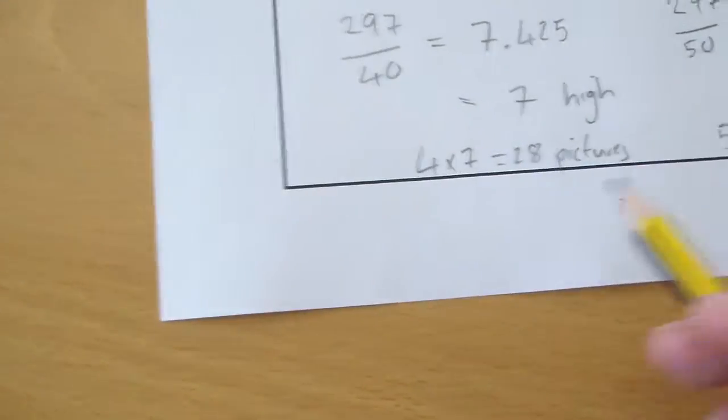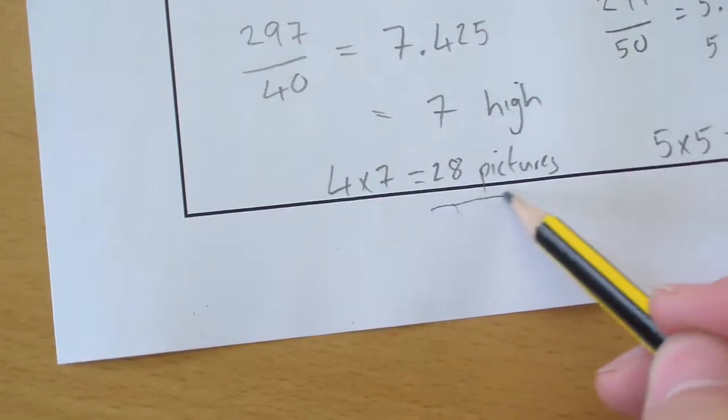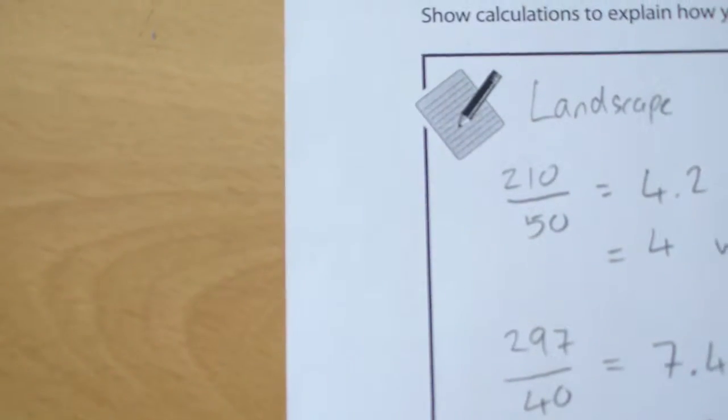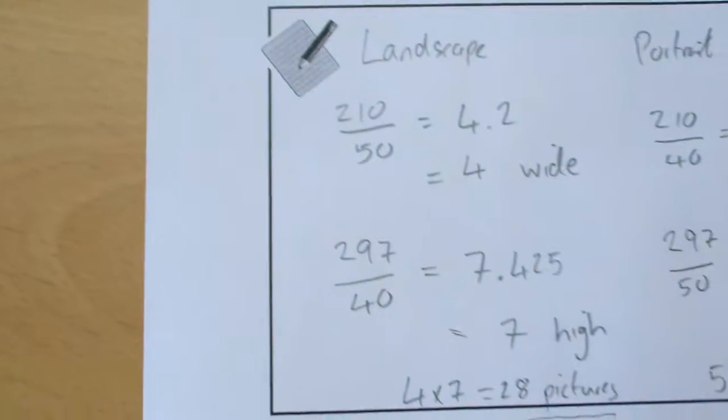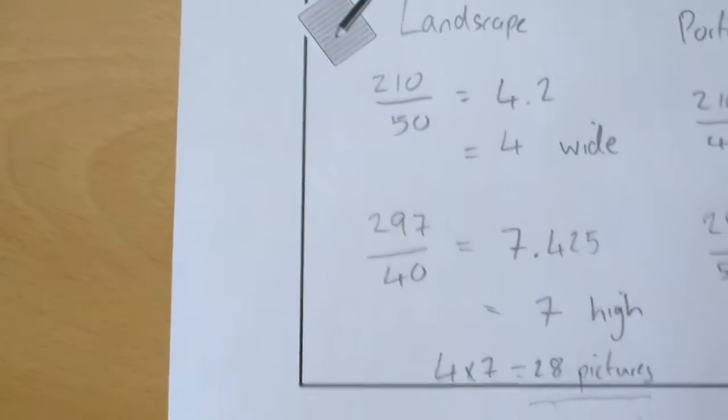So clearly, the answer that we need to show is that 28 pictures is the best and landscape is the best way to place them onto the page.